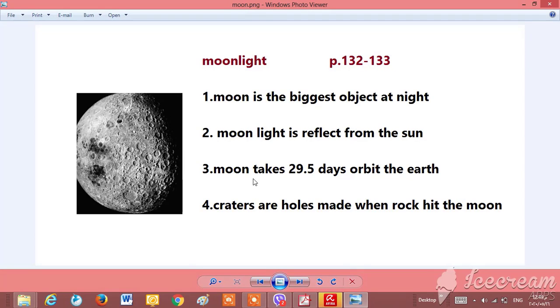The moon takes 29 and a half days to orbit the Earth. Craters are holes made when rocks hit the moon.